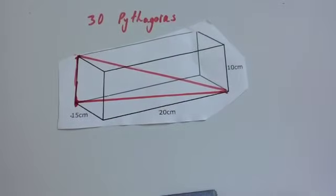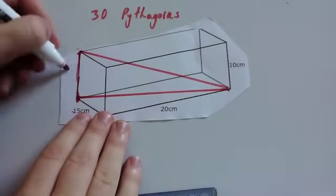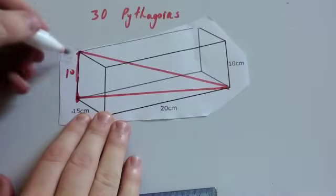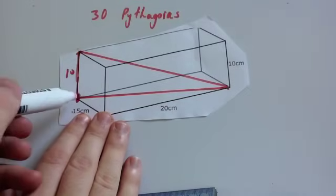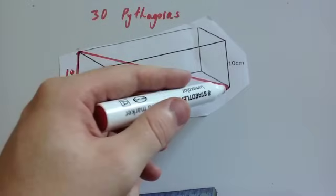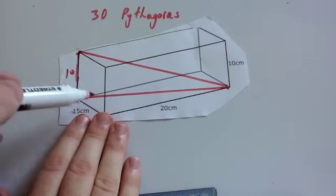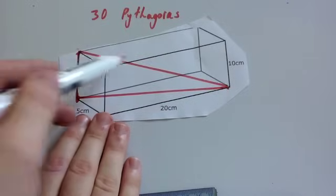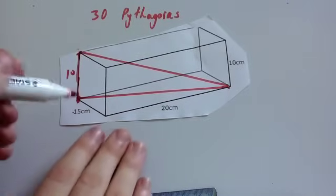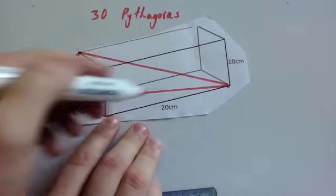The height is 10 centimetres. What I want to do is find the length going through the bottom, from one corner of the rectangle to the other corner, and then I would know the base of the triangle, and then I would find the longest side of the triangle. So I'm going to use Pythagoras' theorem on the rectangle on the base.